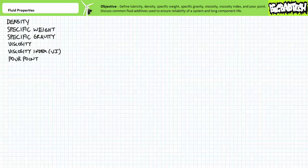Liquids may be characterized by several properties, notably density, specific weight, specific gravity, viscosity, viscosity index, sometimes abbreviated VI, and pour point.